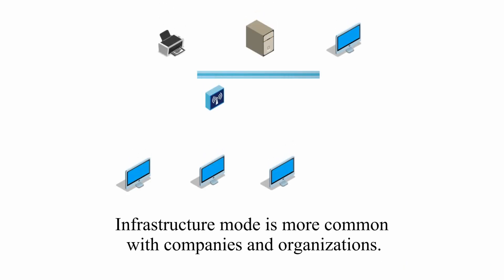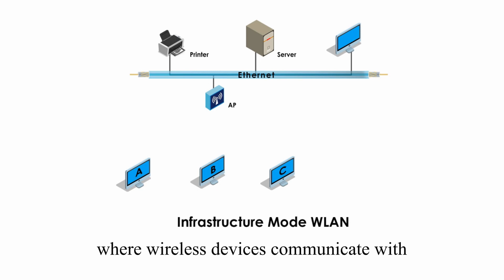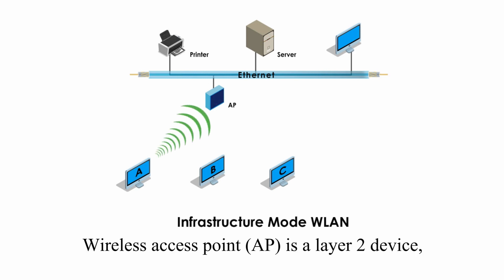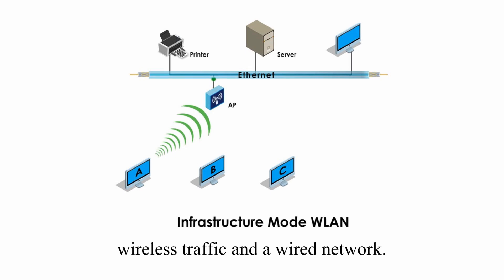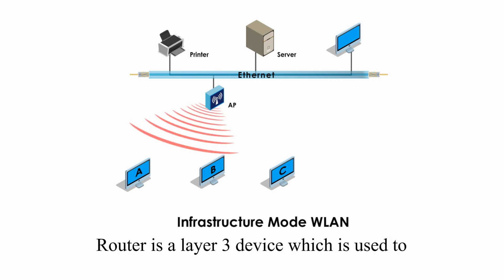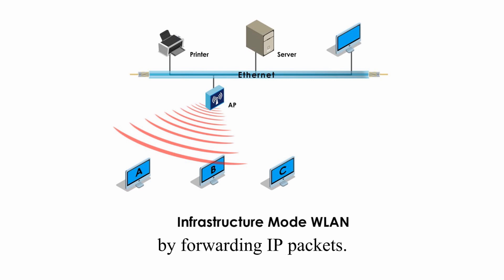Infrastructure mode is more common with companies and organizations. This mode is a centralized wireless network where wireless devices communicate with an access point and not directly with each other. A wireless access point, or simply AP, is a layer 2 device and acts as a bridge between wireless traffic and a wired network. They can be confused with routers — a router is a layer 3 device used to connect different networks or subnets by forwarding IP packets.